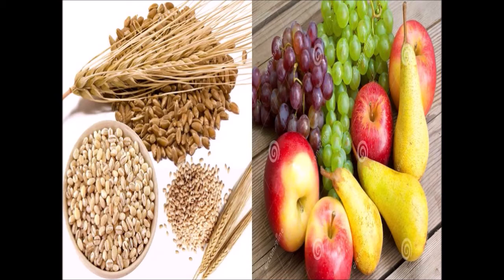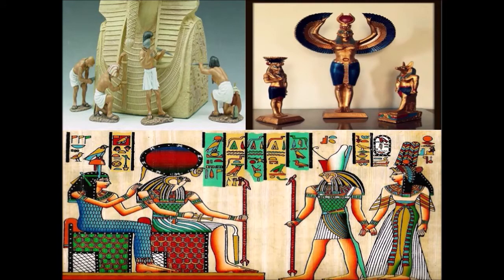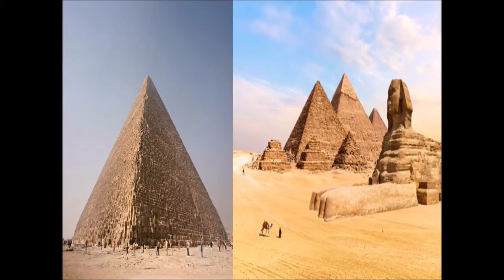Art and Architecture. The Egyptians excelled in art and architecture. The pyramids are massive monuments built as tombs for the Pharaohs. They believed in life after death; therefore, they preserved the dead body. The process of preserving the dead body is known as mummification. Numerous sculptures, paintings, and carvings show the artistic skills of the Egyptians.